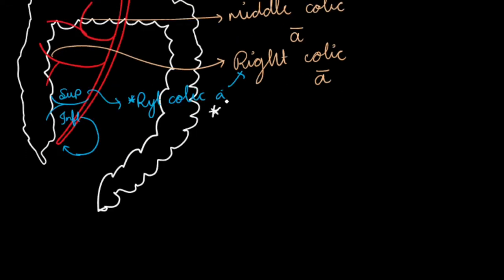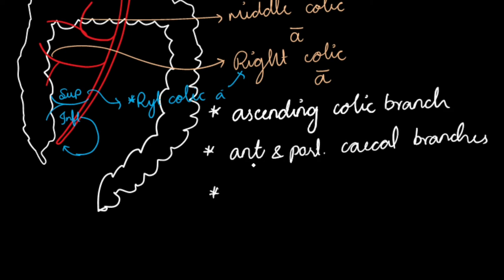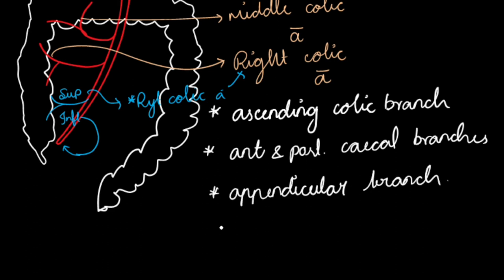The ileocolic artery gives four different branches: an ascending colic branch to the ascending colon; anterior and posterior cecal branches; an appendicular branch; and an ileal branch.